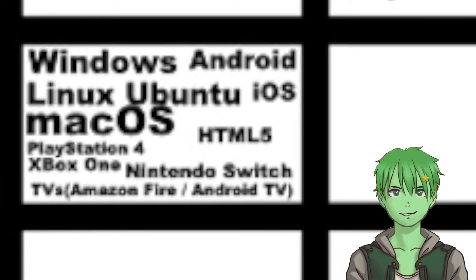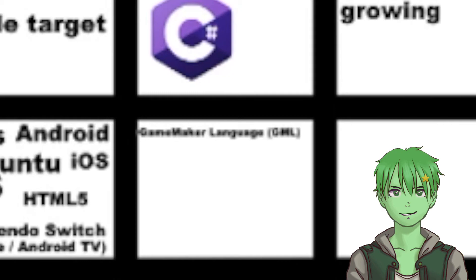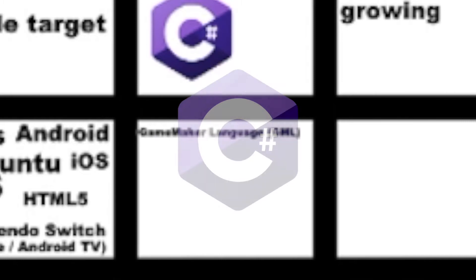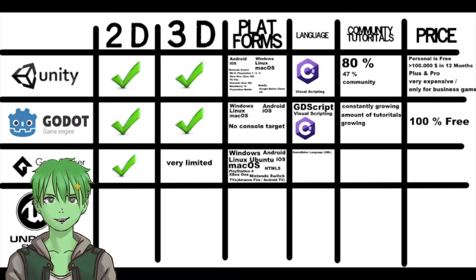Now let's get to the language that GameMaker Studio uses. If you want to make games with GameMaker Studio 2, you use a language called GameMaker Language, or GML for short. GML is really similar to JavaScript and also C languages. Unfortunately, GameMaker Studio 2 has a really huge lack of tutorials, even on YouTube, so that's not ideal if you're just starting out — compared to Unity, which has a lot of tutorials to help you learn C# and the engine.